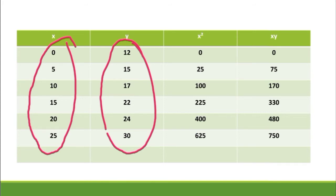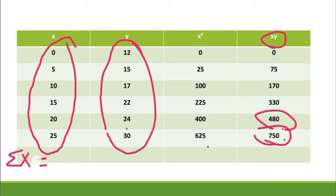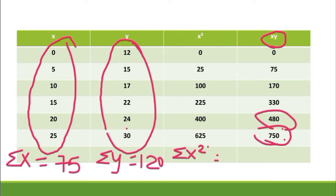Continuing x²: 20²=400, 25²=625. The values of xy: 0×12=0, 5×15=75, 10×17=170, 15×22=330, 20×24=480, 25×30=750. The next step is to find the summations: sigma x = 75, sigma y = 120, sigma x² = 1375, and sigma xy = 1805.